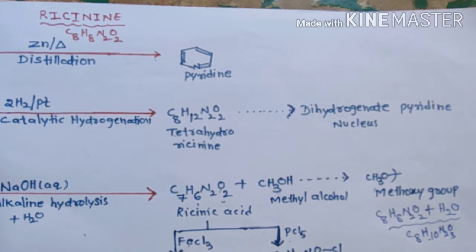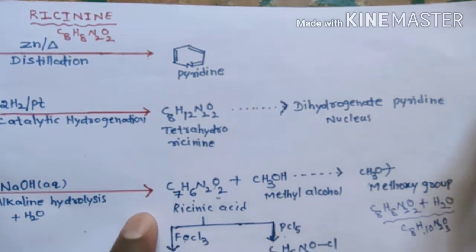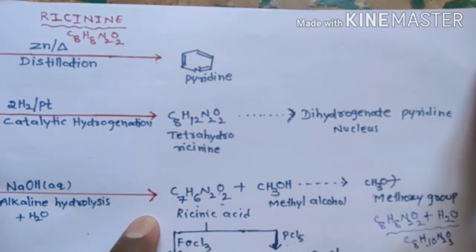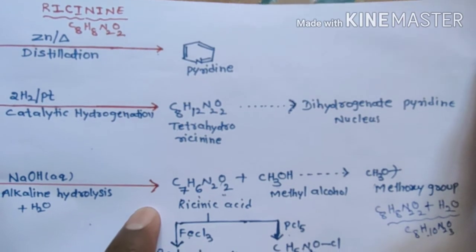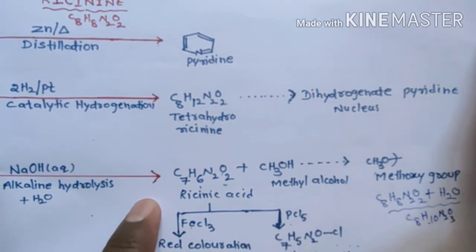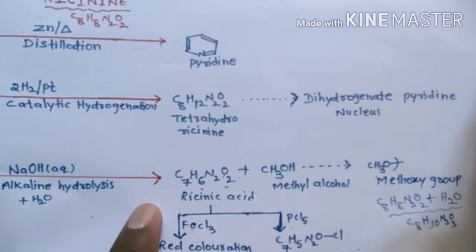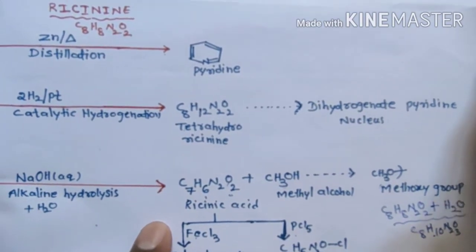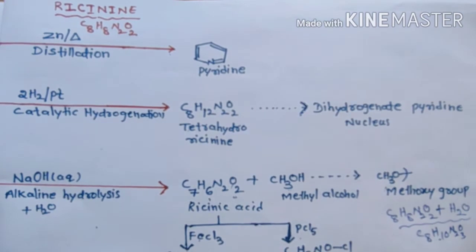When ricinine is subjected to distillation with zinc, it gives us pyridine. This reaction suggests that ricinine contains a pyridine nucleus in it.